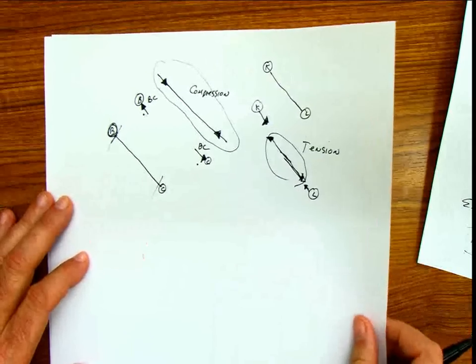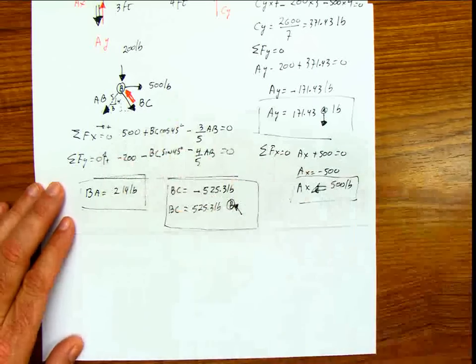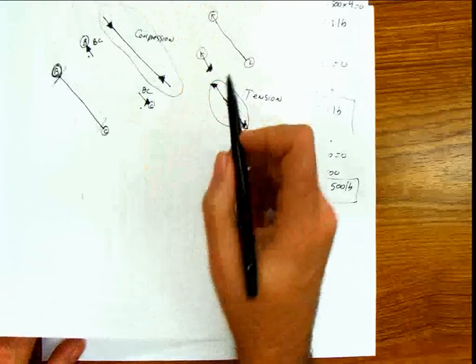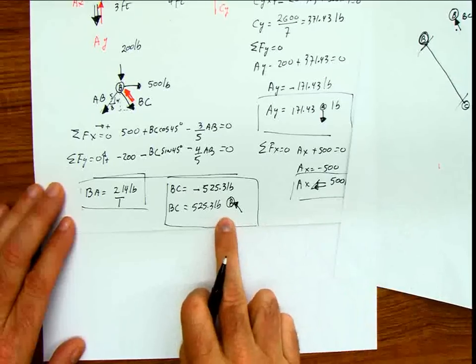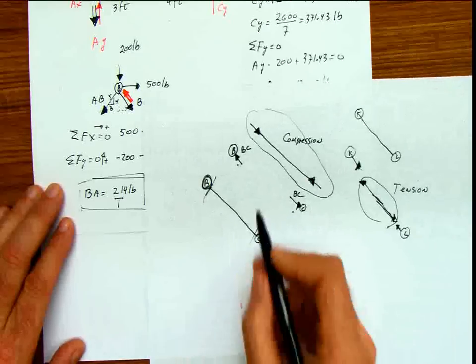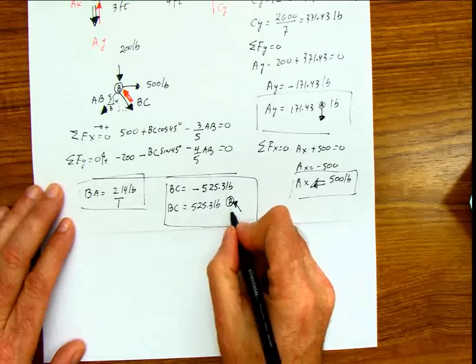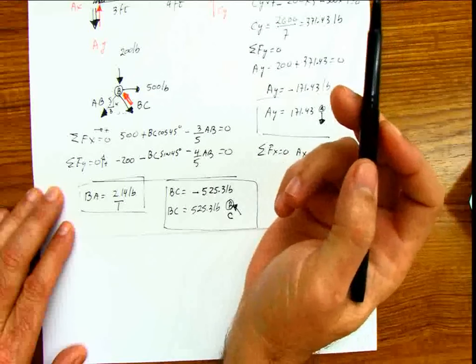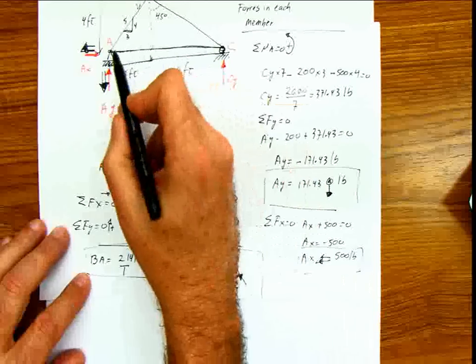Going back to our problem: force AB is leaving joint B — so the bar AB is in tension. Force BC was entering joint B, so bar BC is in compression.